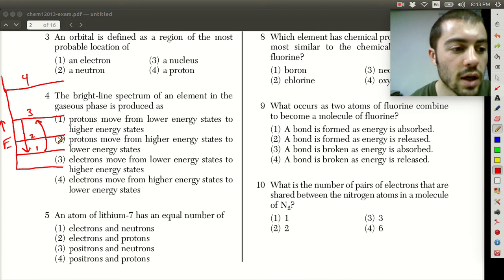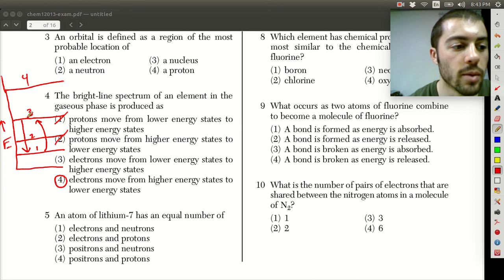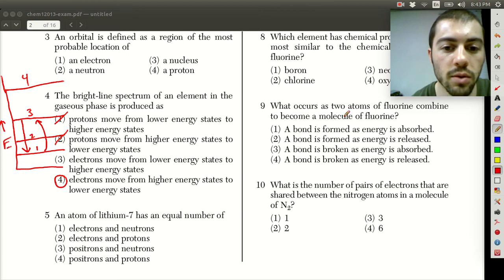So that energy when it gets released produces light and that's the spectra that we see there. So this is again the movement of electrons so we can take out choices one and two there and it's electrons moving from higher energy states to lower energy states. When we're going from energy level one to three we're becoming excited, we're absorbing energy to do that. We're gaining energy. So when we see that light is when we release the energy so that would be going from energy level three to one or it could be four to one or any higher level to a lower level. You're going to be releasing some energy there and that's going to show as some released light that you will be able to see.